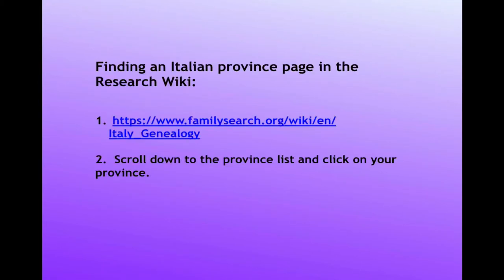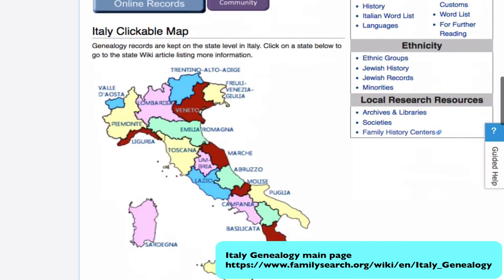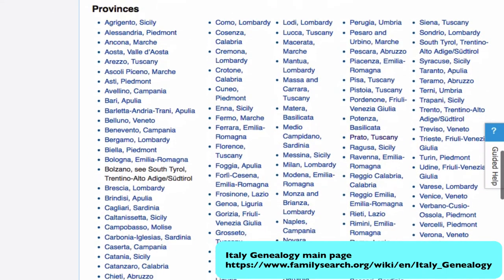You can find the link to the Civil Registration records you need by going to the Province page for the province your ancestors lived in. This URL will take you to the Italy Genealogy main page, and this will be listed in the notes below this video. From the Italy Genealogy page, just scroll down and click on the province that you need.